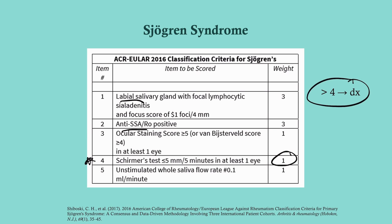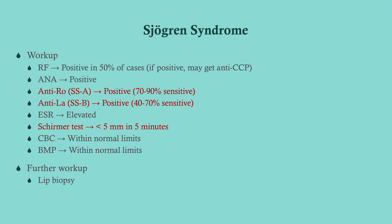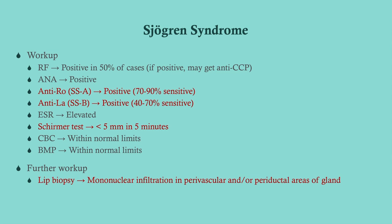A score of four or greater meets the diagnostic threshold. So if you have a positive anti-Ro and a positive Schirmer test, you have a diagnosis and don't necessarily need the biopsy. Anti-Ro and anti-La are fairly sensitive; if both are positive, that's highly suggestive of Sjögren's. Hold off on the lip biopsy until after initial labs — only proceed if you're still short of the four-point threshold.